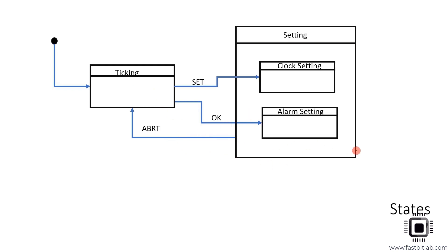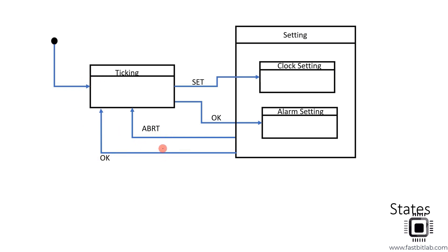We can also give one more transition from the setting state back to ticking mode — this is for when the user is done with the setting and comes back to ticking mode. The only difference between the two transitions is that in one the setting is approved and saved, and in the other it is aborted and not saved.